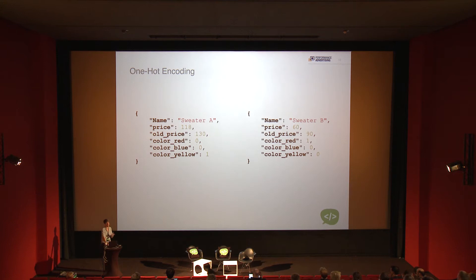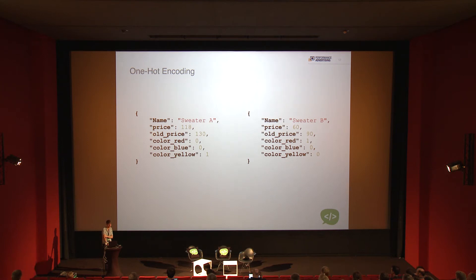With real recommenders you typically end up between 600 to 1,000 dimensions. You're going to add a lot more data to it — I just reduced the numbers here for the sake of simplicity.